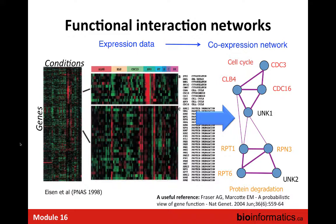Function is a big word and can mean a lot of things. Genes that are co-expressed probably represent a shared stress response in the cell in this case. But in general, we don't necessarily know what type of function a network is representing — we just know that the link gives us some hint of functional interaction. The next slide talks about different types of functional interaction networks.